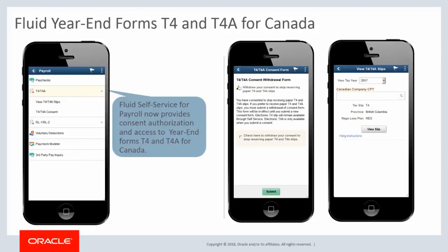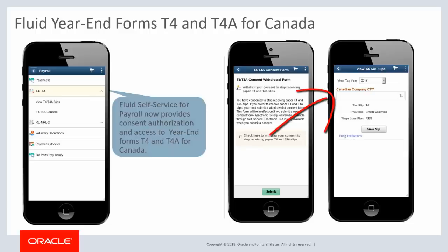Fluid Self-Service for Payroll now provides consent authorization and access to year-end forms T4 and T4A for Canada using a desktop, laptop, or smartphone. Using the T4 and T4A consent page in Payroll Self-Service, employees can request or withdraw consent to receive electronic T4 and T4A slips. Once consent is given to receive electronic year-end forms, employees can view and download these slips using the View T4 and T4A slips page. This completes our discussion of the Fluid Year-End Forms T4 and T4A for Canada feature.